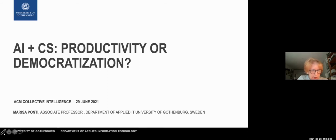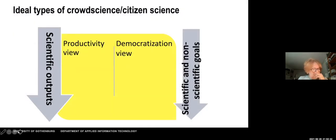But when we combine AI and citizen science, do we aim for productivity at the expense of the democratization of science? In this area, two different streams have been synthesized into contrasting ideal type views. One is the productivity view, focusing on scientific outputs, mostly. And the other one is what we call the democratization view of citizen science, considering scientific, but also other kinds of goals, like, for example, developing scientific citizenship.